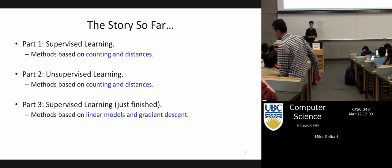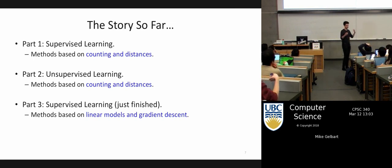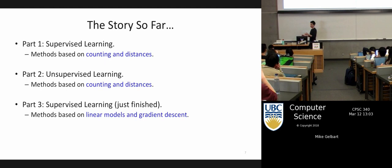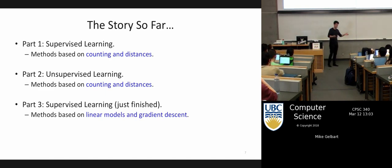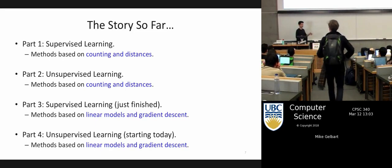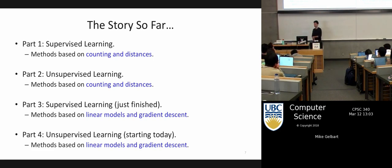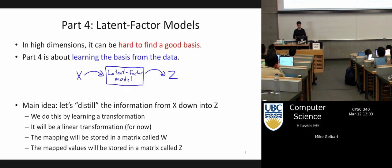Taking an even more zoomed-out view: we started with supervised learning based on counting and distances — naive Bayes, KNN, that kind of stuff. Then we switched into unsupervised learning and talked about clustering. Then we switched back to supervised learning with linear models. Starting today, we're going back to unsupervised learning, but sticking with the idea of linear models. We can name part four of the course latent factor models.